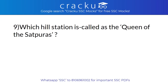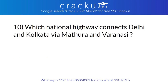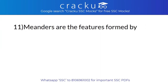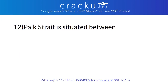Which hill station is called the Queen of Satpuras? Answer: Pachmarhi. Which national highway connects Delhi and Kolkata via Mathura and Varanasi? Answer: NH2. Meanders are the features formed by. Answer: Rivers. Palk Strait is situated between. Answer: India and Sri Lanka.